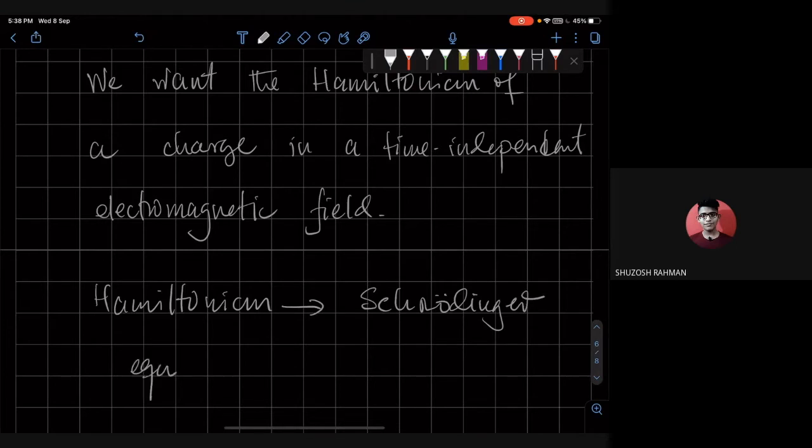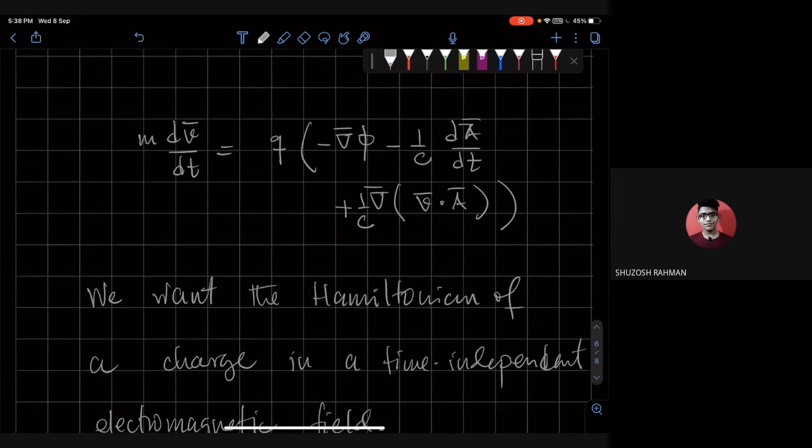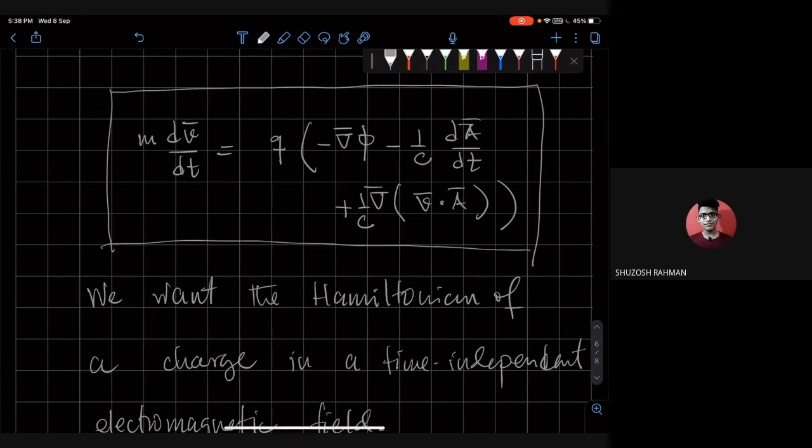So this is the motivation for writing the equation of motion like this, because what is an equation of motion? An equation of motion is nothing but an Euler-Lagrange equation for some Lagrangian for the system.